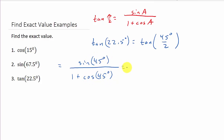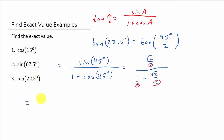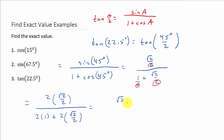The sine of 45 is √2 over 2, and cosine of 45 is also √2 over 2. So we have (√2/2) over (1 + √2/2). This is a complex fraction — we look at all denominators, the common denominator is 2. Multiplying each term by 2: we get 2 times (√2/2) over (2 times 1 plus 2 times √2/2), which gives √2 over (2 plus √2).